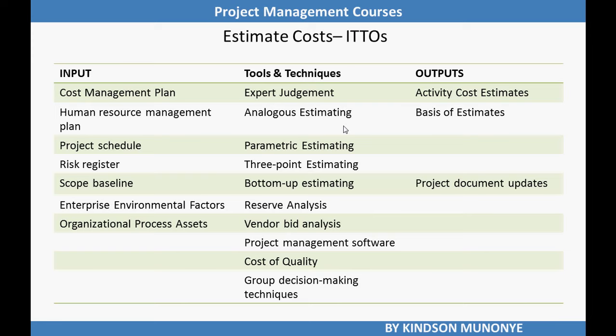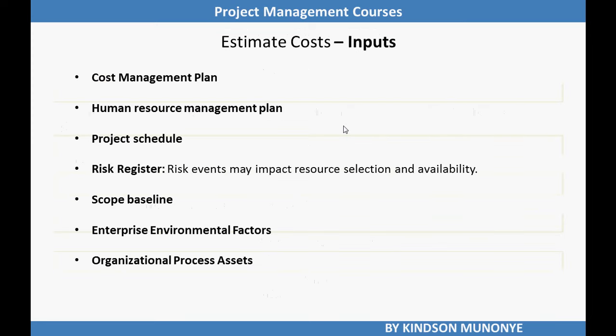Let's take a look at some of these ITTOs. The cost management plan is the output of the plan cost management process discussed in the previous presentation. We also need the human resource management plan to provide project staffing attributes, personnel rates, and related rewards and recognition, which are necessary components for developing project cost estimates. We also need the project schedule as well as the scope baseline. Remember, the scope baseline is the approved scope statement together with the WBS and the WBS dictionary. We also need enterprise environmental factors and organizational process assets.